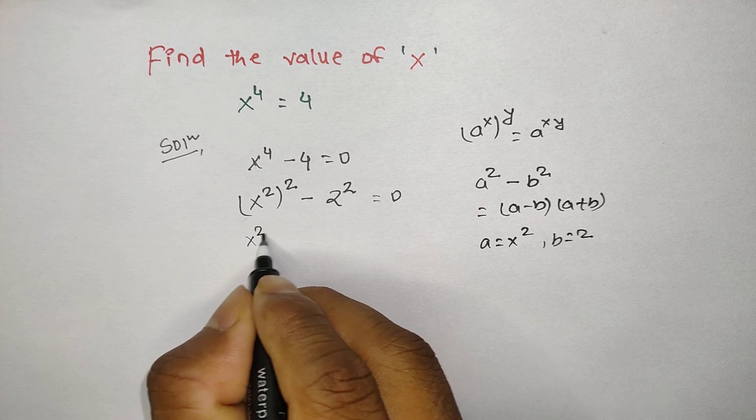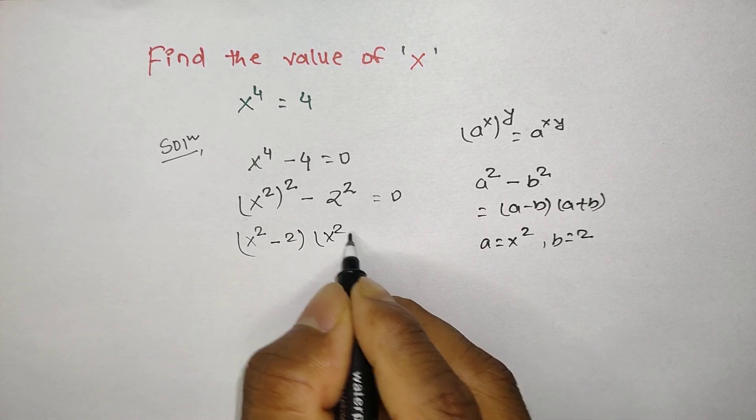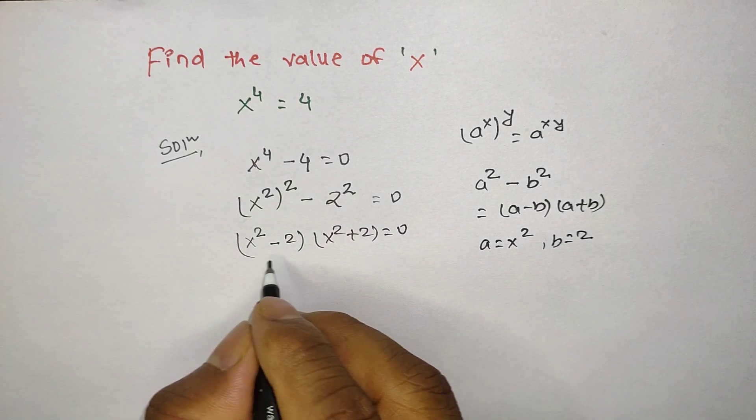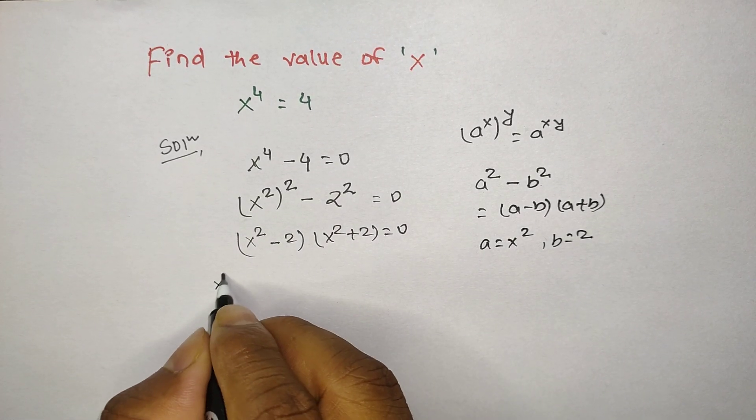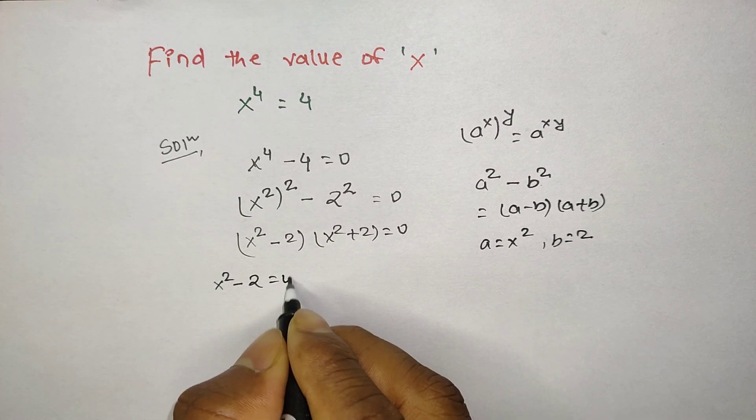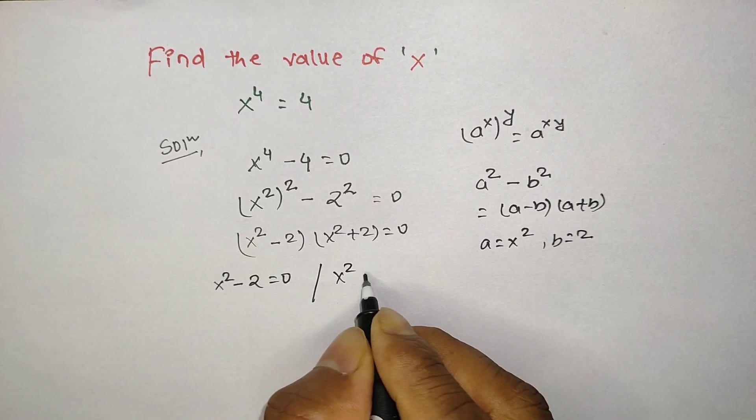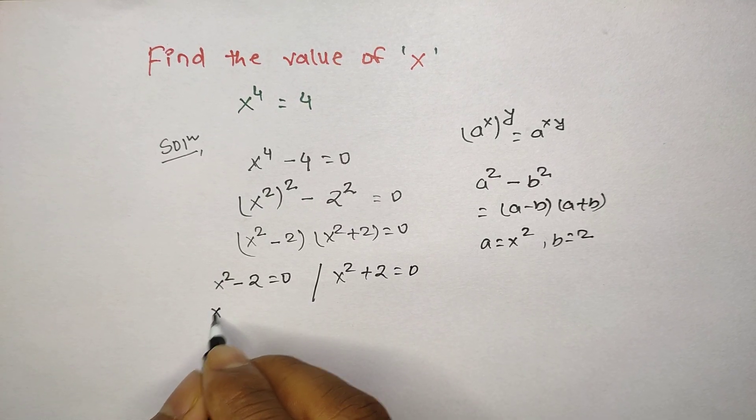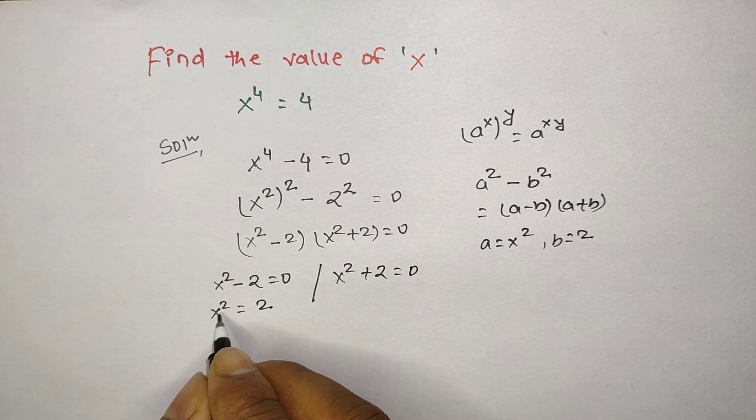So here we have two terms: either x power 2 minus 2 equals 0, or x power 2 plus 2 equals 0. From here we can get x square equals 2. If we move this square to the right hand side, then x equals plus or minus square root of 2.